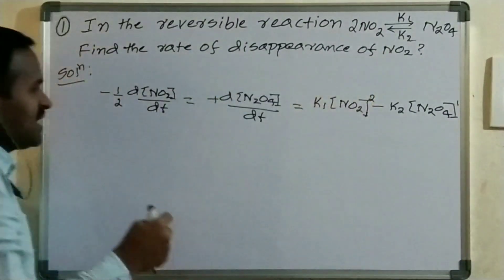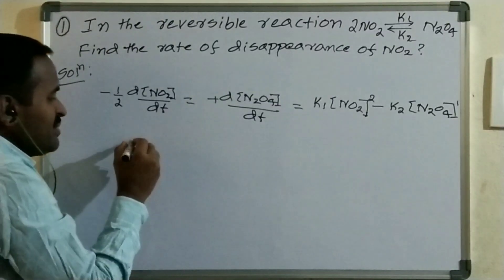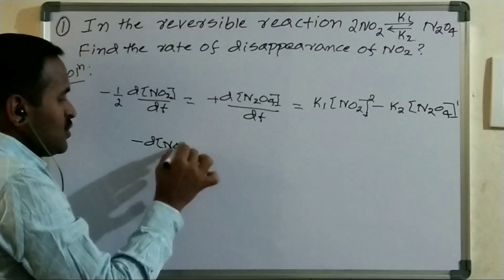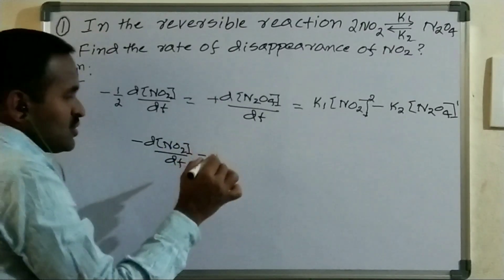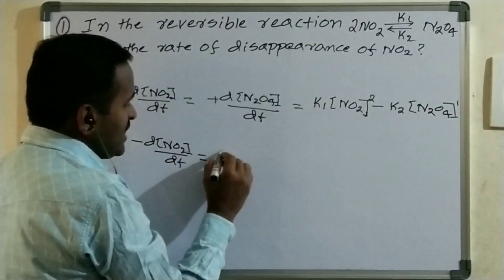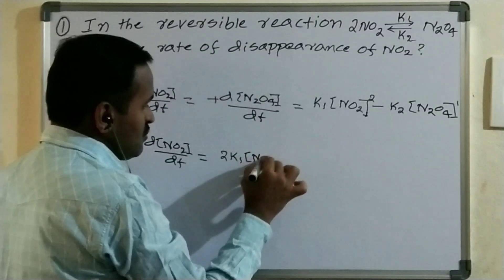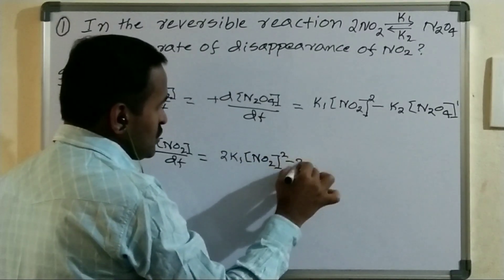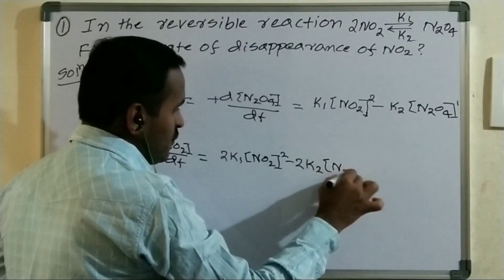They are asking for the disappearance of NO2, so: minus d[NO2]/dt equals 2K1 × [NO2]² minus 2K2 × [N2O4] to the power 1.